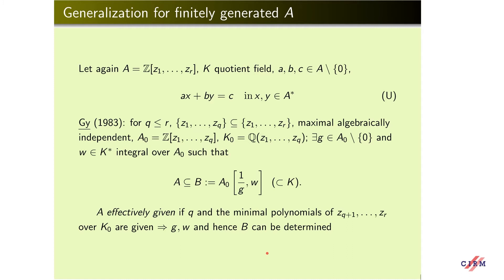Generalization for finitely generated domains. Let again A, B, S, F be a domain with quotient field K, and consider again this unit equation. We can choose from the set of generators a maximal algebraically independent subset Z₁,...,Z_Q. Denote by A₀ this polynomial ring. One can show that there is an element G in A₀ and an element W in K* which is integral over A₀ such that a certain relation holds, and in fact this can be done in an effective way. We say that A is effectively given if Q and the minimal polynomials of the generators over K are given. In this case G, W, and hence B can be determined.